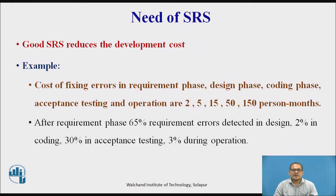Consider this example. The cost of fixing errors in the requirement phase, design phase, coding phase, acceptance testing phase, and operation and maintenance phase are given as 2, 5, 15, 50, and 150 person-hours per month respectively. This is the cost of fixing errors in each phase.